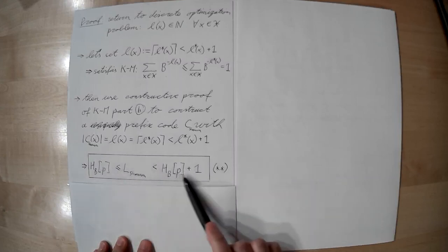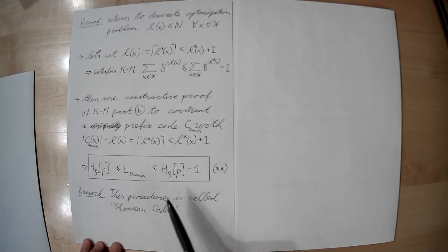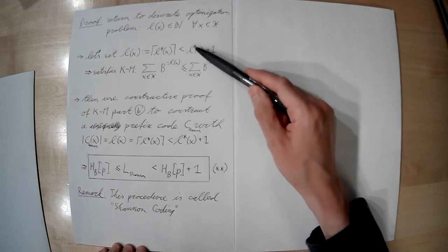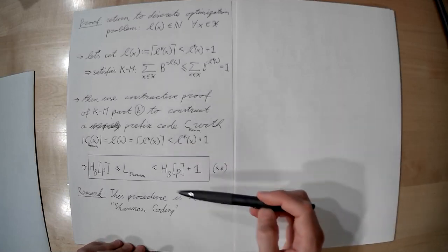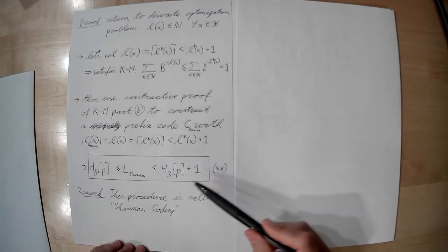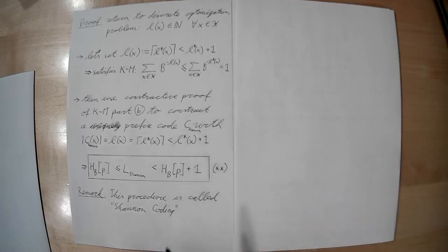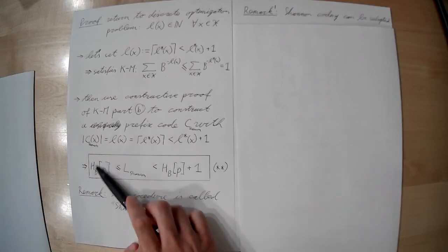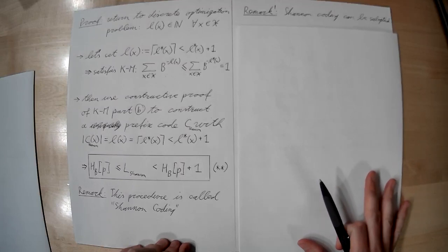We can now sandwich the expected codeword length for the Shannon code: H(p) ≤ L(C_Shannon) < H(p) + 1. Any symbol code has expected codeword length not shorter than the entropy — that's our fundamental lower bound. But there exists a symbol code, namely the Shannon code, that comes within less than one bit of this lower bound. This procedure — computing information contents l*(x) = ⌈−log_b p(x)⌉ and applying the constructive algorithm — is called Shannon coding.